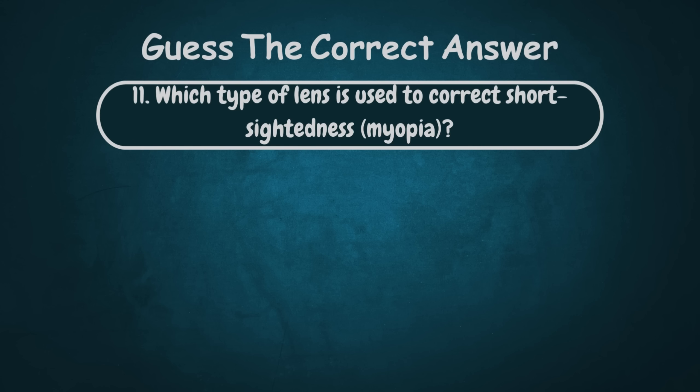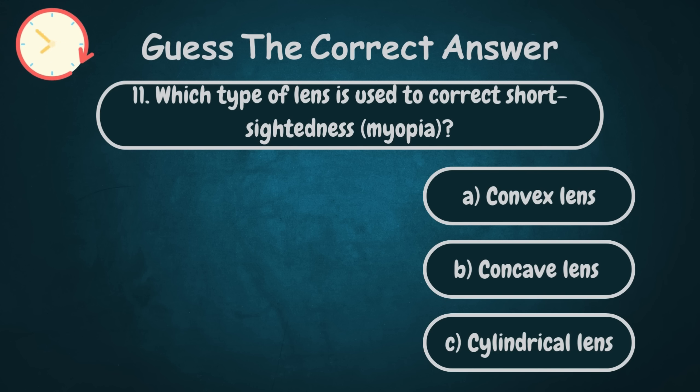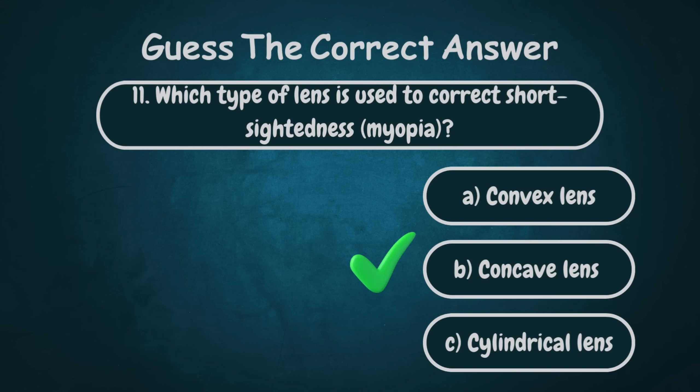Which law states that current is directly proportional to voltage? The lens used to correct short-sightedness, myopia? Option B.